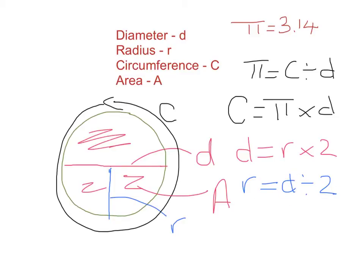The last formula is for area: area equals pi times r squared. Keep in mind what r squared means — r squared is r times itself, so r times r. It does not equal r times 2; it is r times r. So if r represents a radius of 4, then r squared would be 4 times 4.